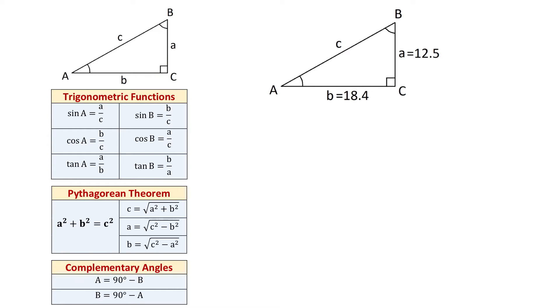In any of these functions, we have three variables — an angle and two sides. So, if any two variables are given, we can use these trigonometric functions to find the missing variable.